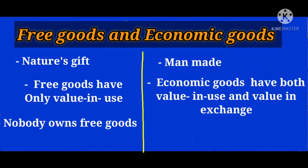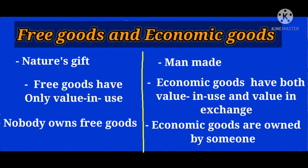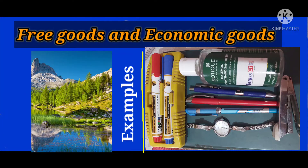Nobody owns free goods, as they are nature's gift. But economic goods have ownership — they are owned by someone. For example, books, cars, pens, and jewellery are owned by someone. Examples of free goods include sunlight, air, and water.